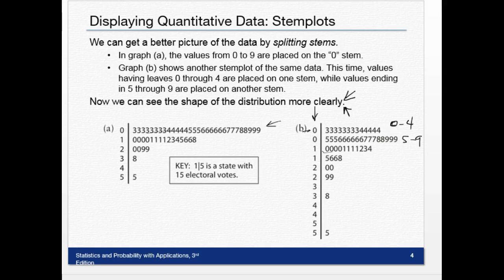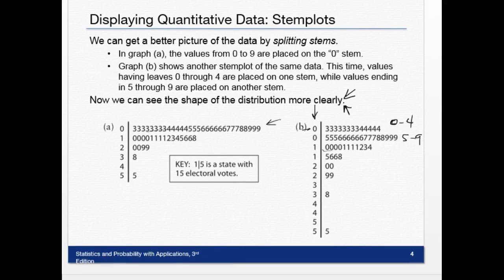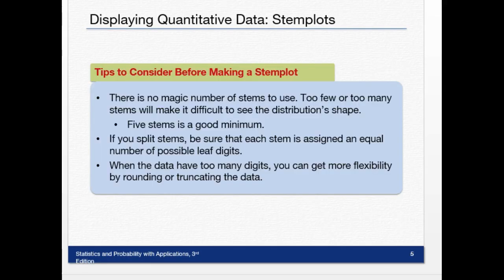Tips to consider before making the stem plot: there's no magic number of stems to use. Too few or too many stems can make it difficult to see the distribution shape. Generally, five stems make a good number. If you do split the stems, make sure that each stem is assigned an equal number of possible leaf digits.